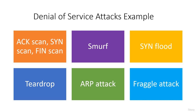Let's talk about examples of denial of service attacks. The first examples are ACK scan, CN scan, and FIN scan. These techniques use similar approaches to check whether ports on the target are open and can be exploited. They are also used to gather information as well as deny services. For example, the ACK scan technique is used by an attacker to gather information about the target's firewall or access control list configuration.